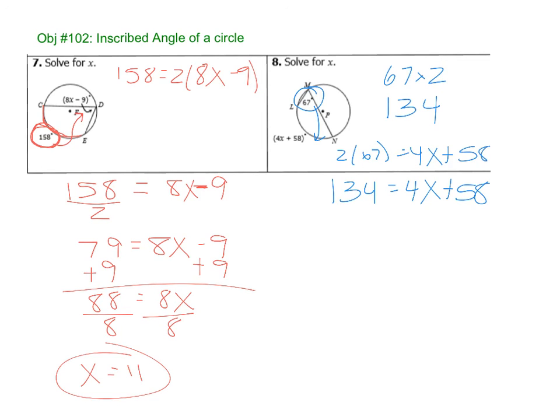You also could have done 67 equals 4x plus 58 divided by 2. We could take the arc and divide by 2, which is what we did at number 7. Either way, I think this is easier, but you can do these either way.